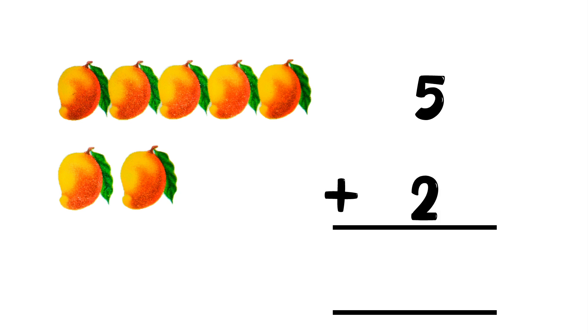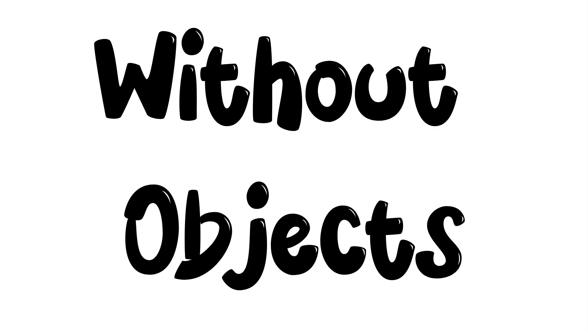You have some mangoes. How many mangoes do you have? One, two, three, four, five — yes, you have five mangoes. If you got some more mangoes, how many are the more mangoes? One, two — yes, two more mangoes. How many do you have in total? Five mangoes plus two mangoes equals how many mangoes? Just count them: one, two, three, four, five, six, seven — yes, you have seven mangoes in total.